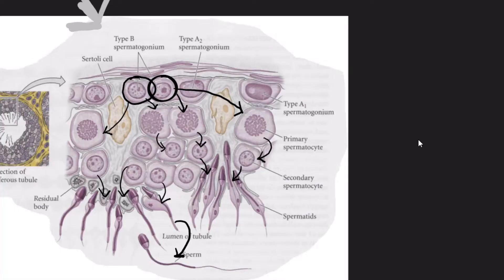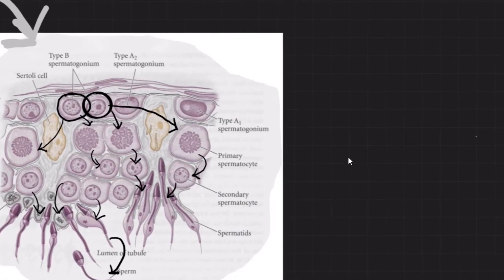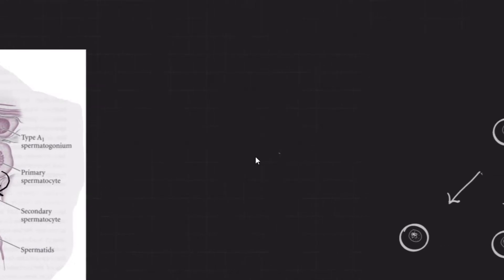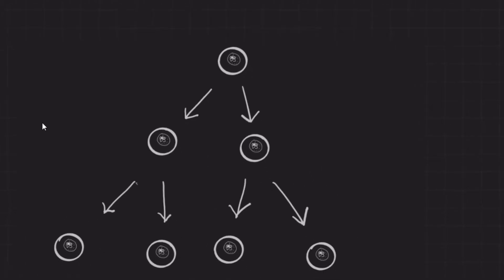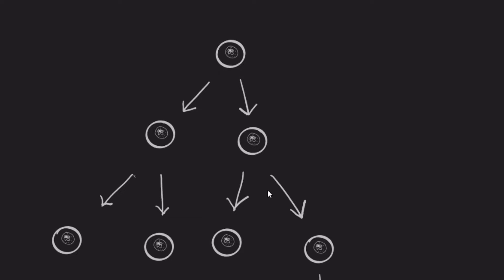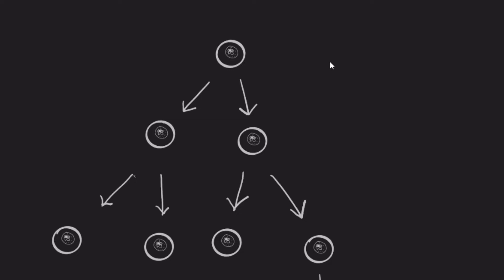Let's take a detailed look at the steps of spermatogenesis. In the first phase, referred to as the multiplication phase, the primary germ cells will divide and multiply by mitosis to form different types of spermatogonia.